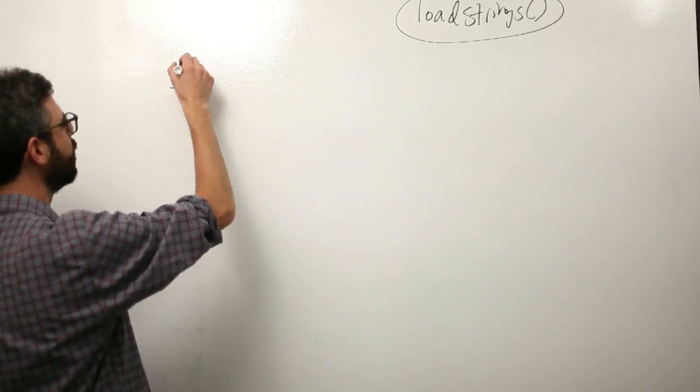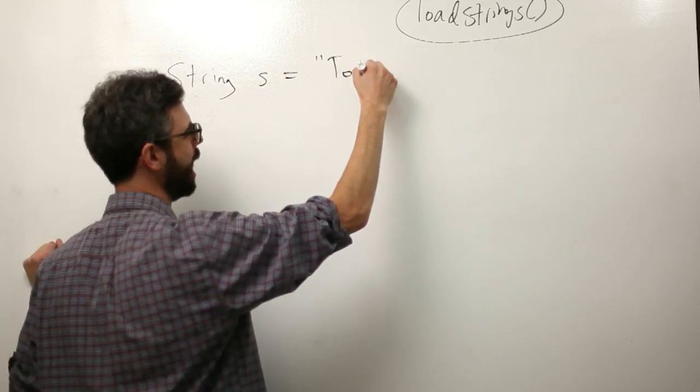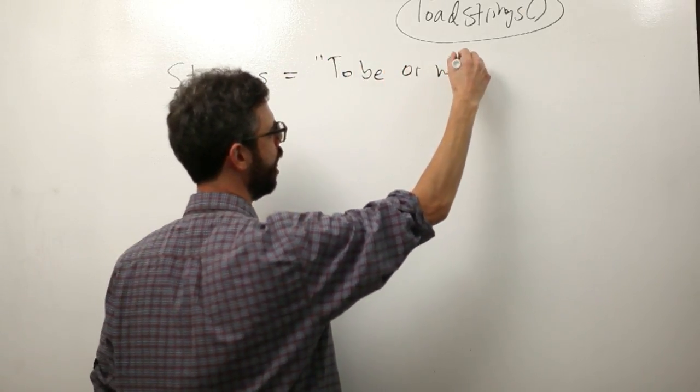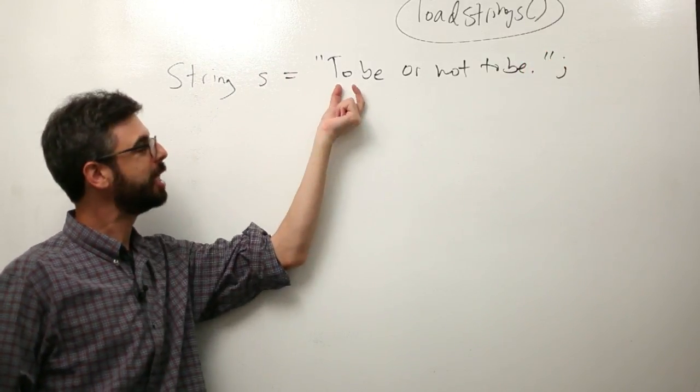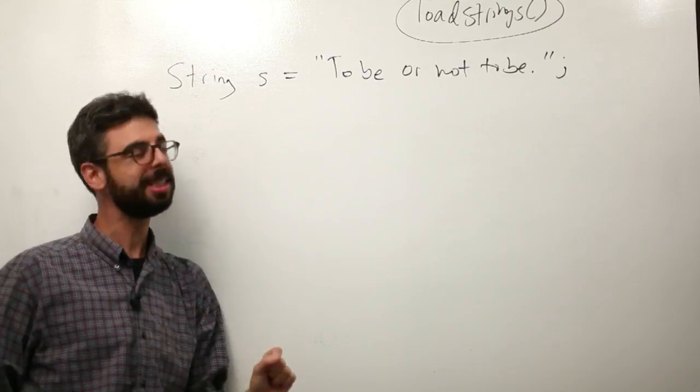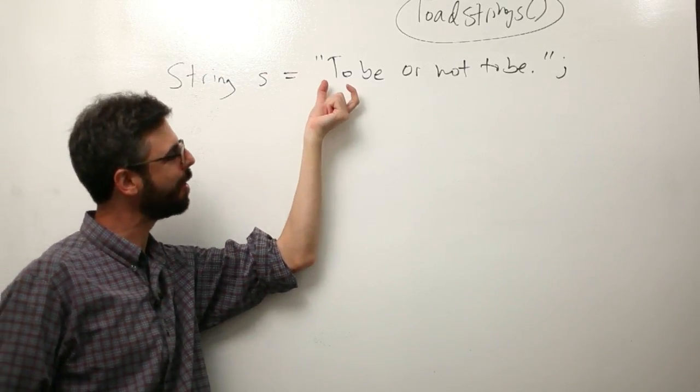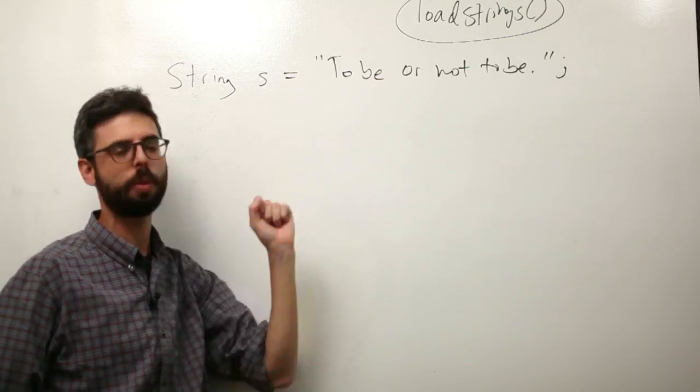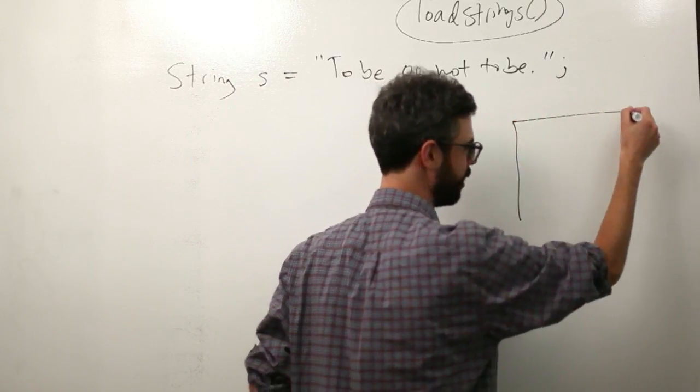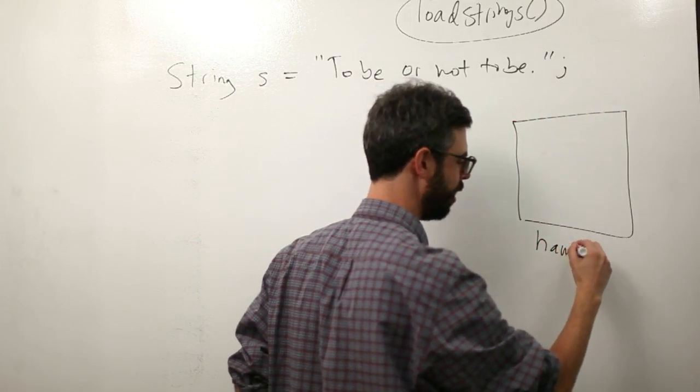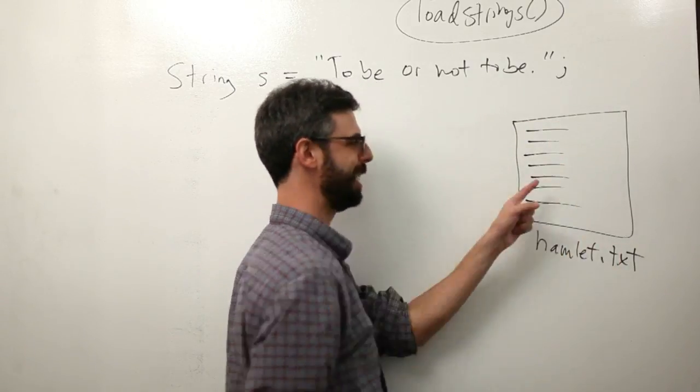So let's say we wanted to do something where we had a Shakespeare play as a string 'to be or not to be' and we know we could use the split function and say split this text up by spaces and now we have an array where each element is an individual word. But I don't want to just hard code 'to be or not to be'. Let's say I have a file called hamlet.txt and the entire Shakespeare play is in this file.